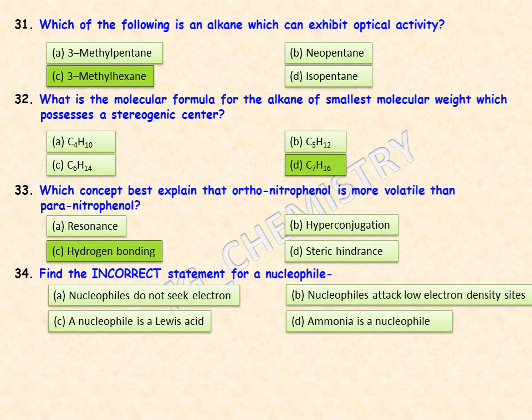Find the incorrect statement for a nucleophile. Options are: nucleophiles do not seek electrons; nucleophiles attack low electron density sites; a nucleophile is a Lewis acid; and ammonia is a nucleophile. Option C is the incorrect statement — a nucleophile is NOT a Lewis acid; that is not a correct statement.